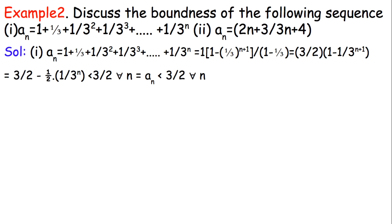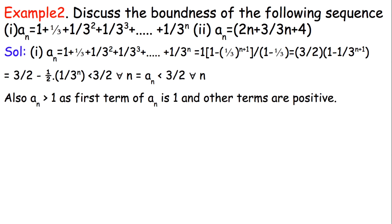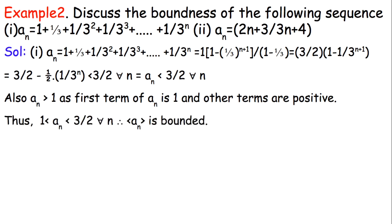The second term (1/2) × (1/3)^N cannot be negative and cannot be less than 0. So AN cannot exceed 3/2 for any value of N. Also, AN is greater than 1 since the first term is 1 and all other terms are positive. Therefore AN is always greater than 1 and always less than 3/2, so it is bounded.